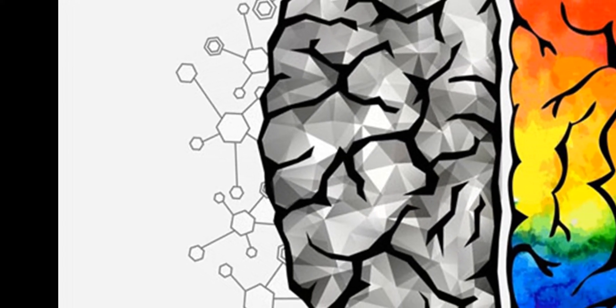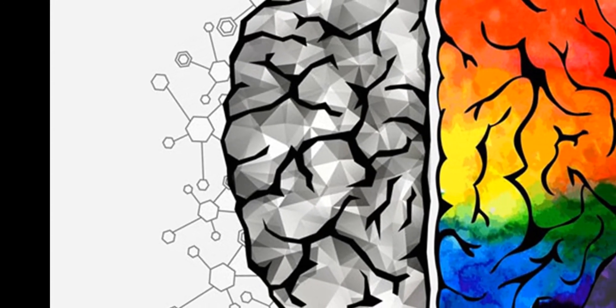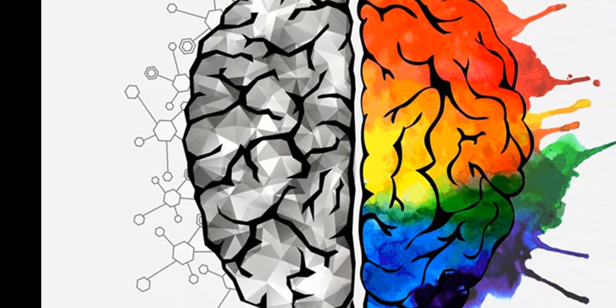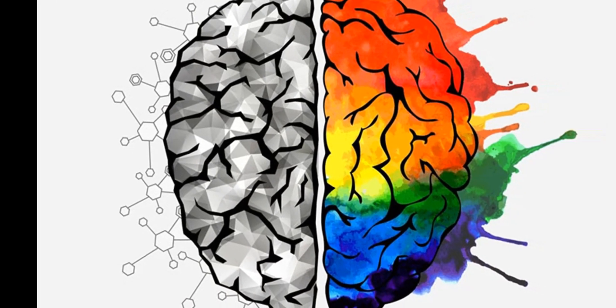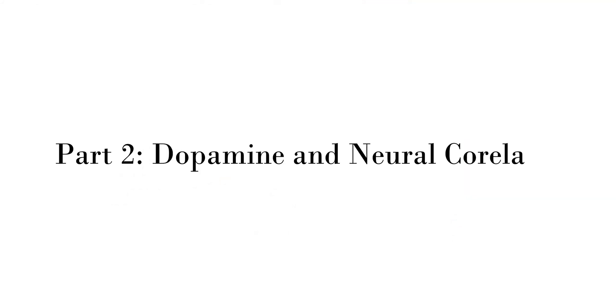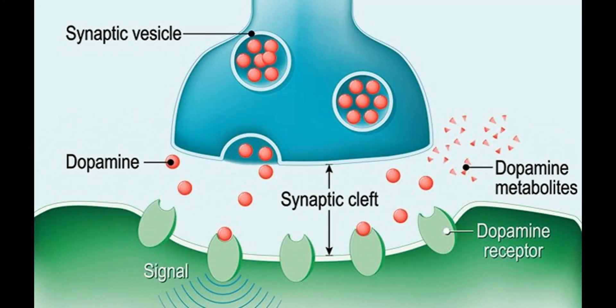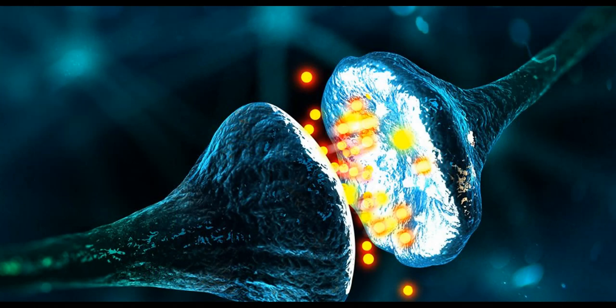The biological explanation emphasizes the role of inherited factors and dysfunctional brain activity in the development of schizophrenia. There are two parts to this: the dopamine hypothesis and neural correlates. Neurotransmitters are fast chemical messengers that travel between neurons — brain cells — by crossing the synapse. They bind themselves to receptors on the next neuron.